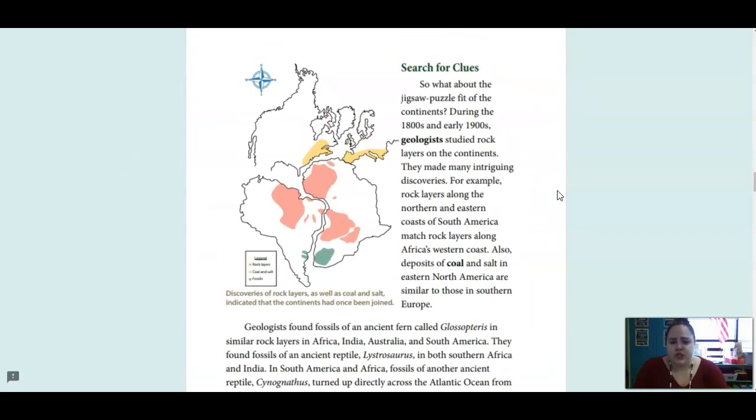So, what about the jigsaw puzzle fit of the continents? During the 1800s and early 1900s, geologists studied rock layers on the continents. They made many intriguing discoveries. For example, rock layers along the northern and eastern coasts of South America match rock layers along Africa's western coast. Also, deposits of coal and salt in eastern North America are similar to those in southern Europe. So, this map is showing all those continents when they were closer together. And you can see that these colors match up with the types of rocks and fossils that are found. So, right here and right here are similar types of rocks.